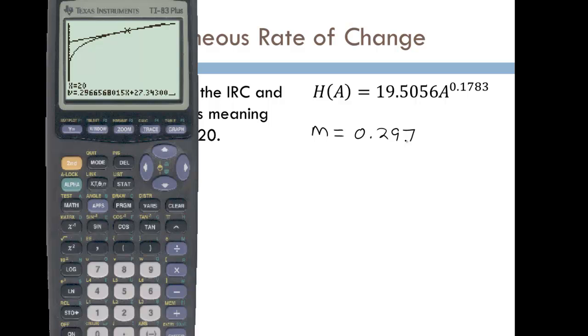So that's the instantaneous rate of change at A equals 20. It means that a boy's height is increasing by 0.297 inches per month when he is 20 months old.